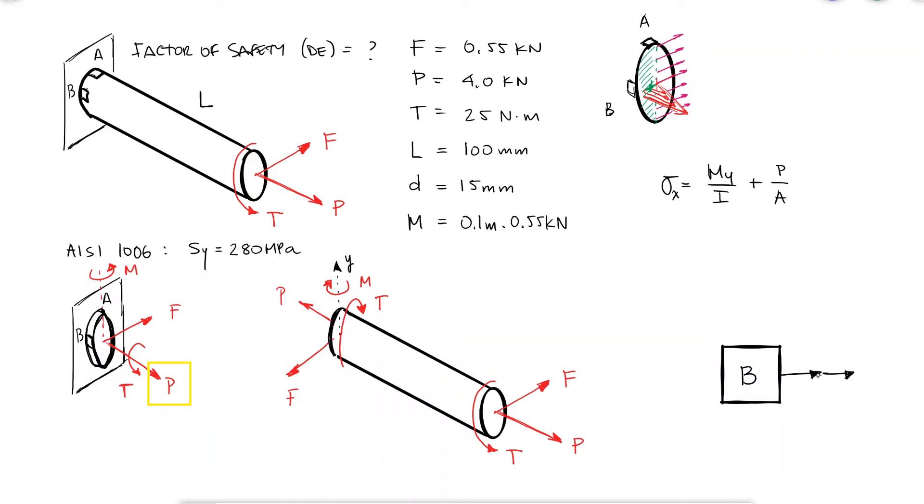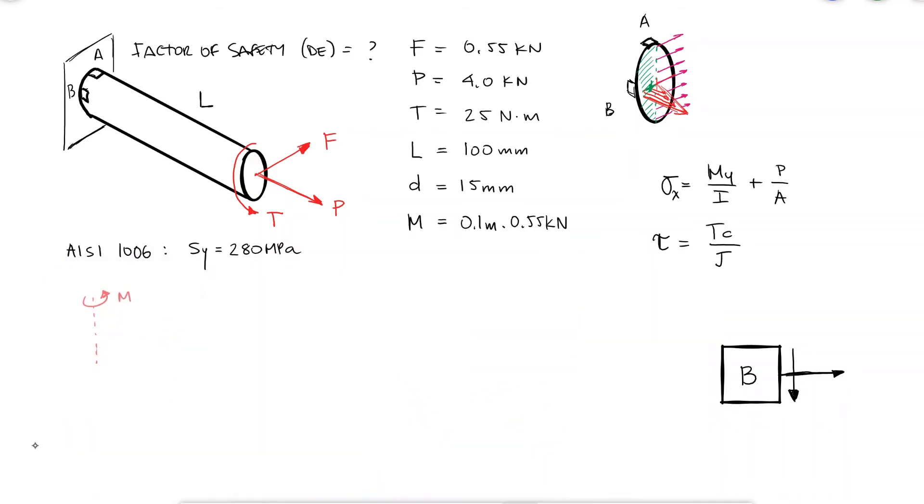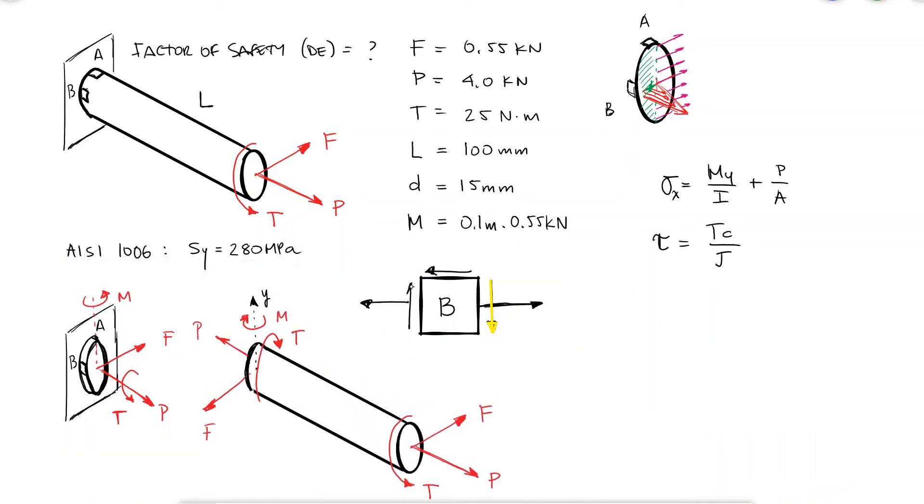Load P creates a normal stress in the same direction, and the torque T creates a shearing stress that we would see as a vector going down on the right face of element B.